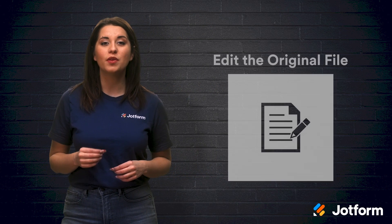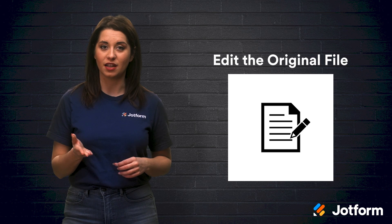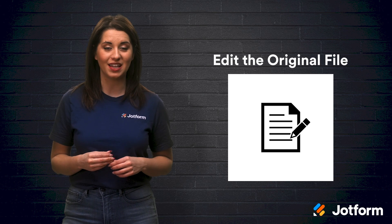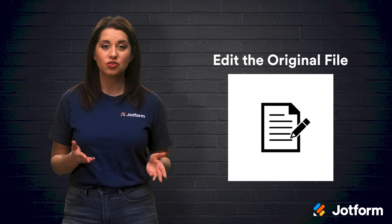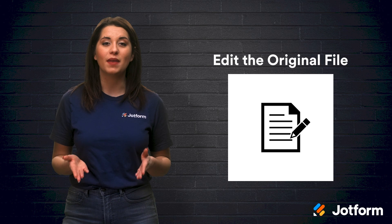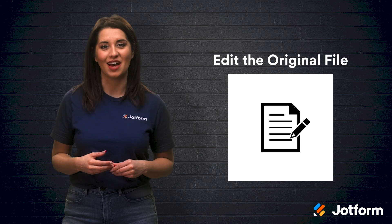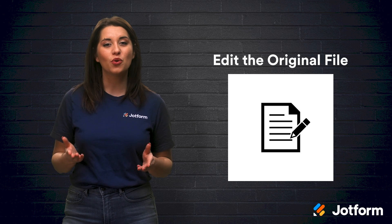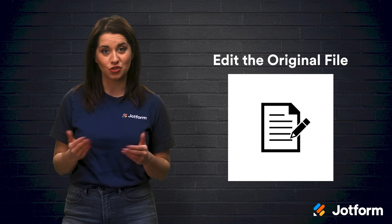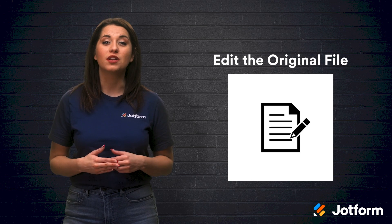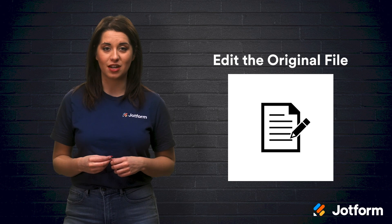One of the most basic ways to make changes to a PDF is to open the original file, if you created it, before saving the document as a PDF. Once you're in the original file, you can make any changes and then save the file as a PDF. Of course, this only works if you have that original document. If you don't, then you'll need to try one of these following strategies.